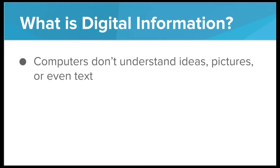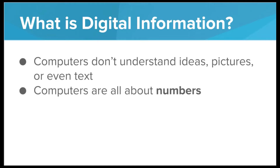So what is digital information? Well, computers don't really understand ideas, or pictures, or even text. Computers are all about numbers. When it comes down to it, computers really aren't all that smart. Computers are just very fast at doing simple mathematical operations.